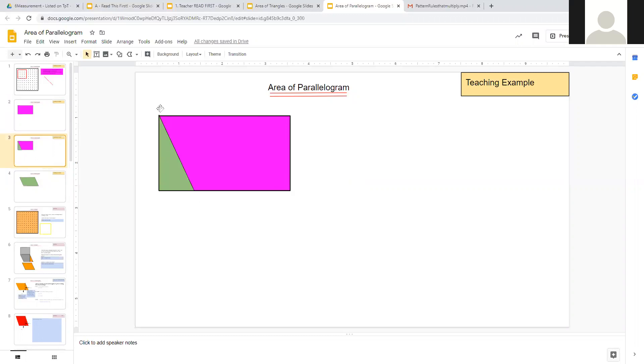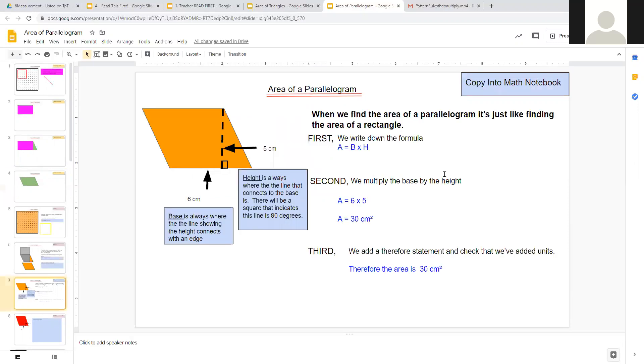When we want a parallelogram, we're just going to cut off a piece of that square and add it on over here. And when we do that, we get this nice parallelogram. So to find the area of a parallelogram is really just the same as finding the area of a rectangle.